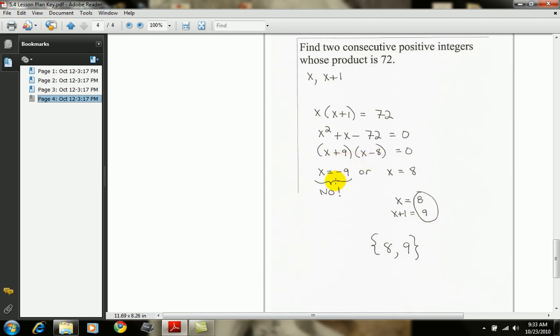When I set each of those to 0, the first factor, or the first x value would be negative 9, and the next x value would be 8. We can't use negative 9, because look at the problem. It says we're looking for consecutive positive integers. So, we eliminate the negative 9, we keep the 8.